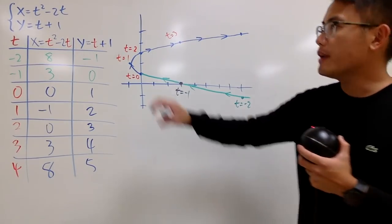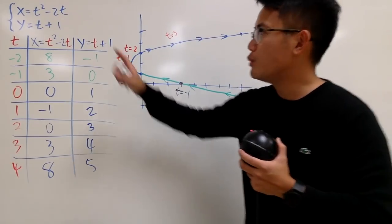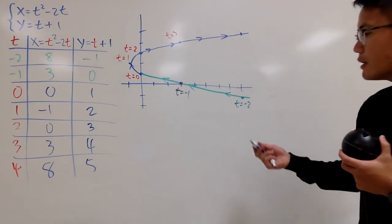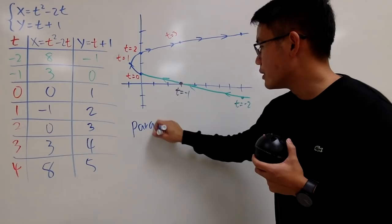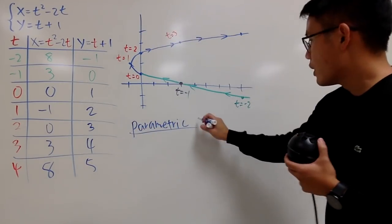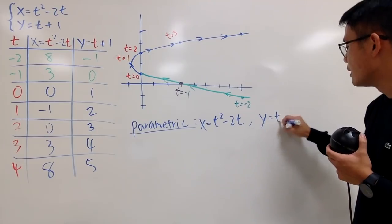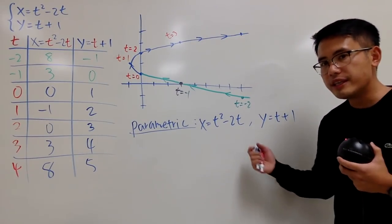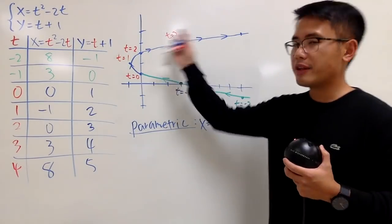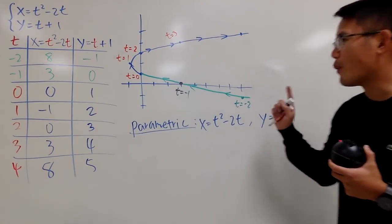Another way to approach this is to change the parametric equation to the Cartesian form — namely, we get rid of the parameter t and have an equation in x and y only. We have x equals t squared minus 2t, and y equals t plus 1. My goal is to get y in terms of x. Even though this curve is not the graph of a function, we just need two equations and we'll make it work.